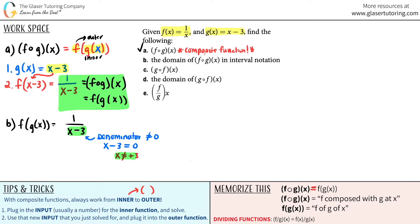In interval notation, I start from negative infinity — using a parenthesis because negative infinity is just a theoretical concept — and go up to but not including 3, so I use a parenthesis there. Then I place a union symbol and start again at 3 with a parenthesis, going all the way to positive infinity with a parenthesis. That is your domain in interval notation, so part b is done.